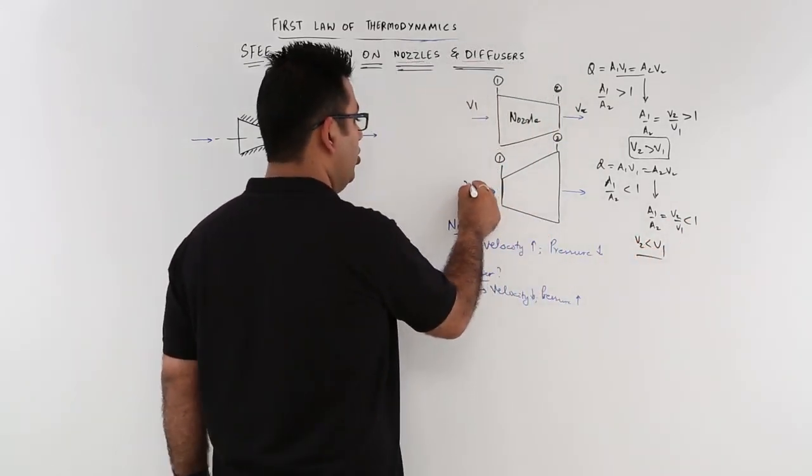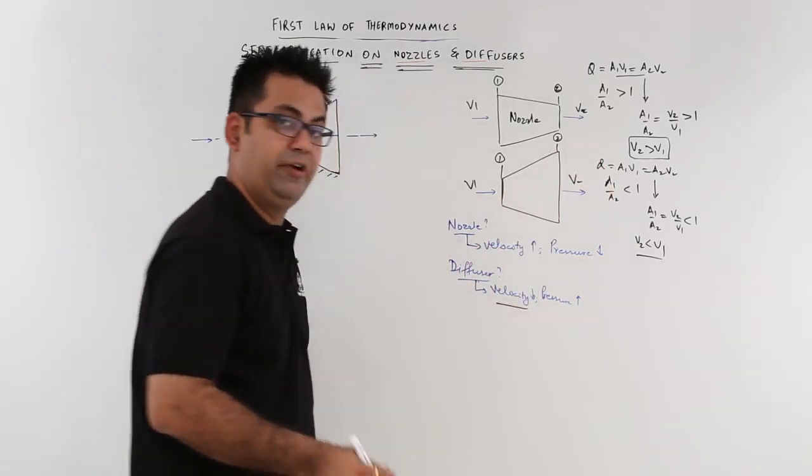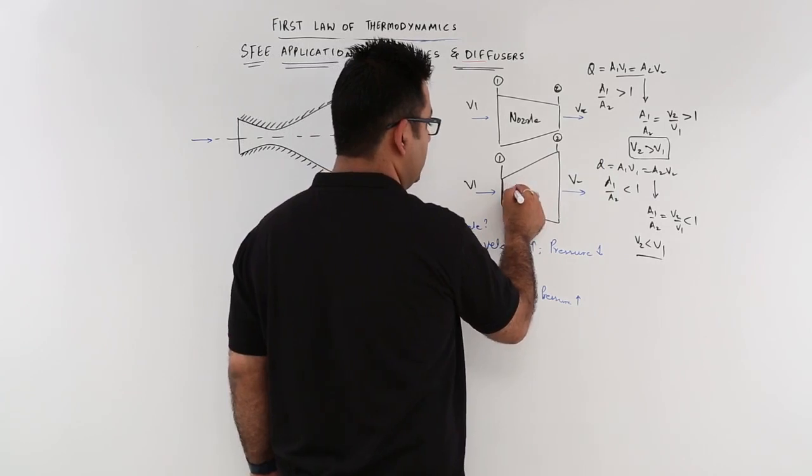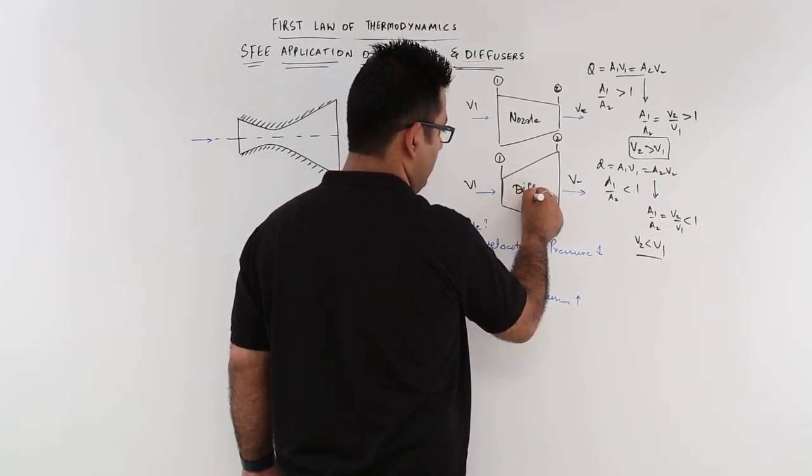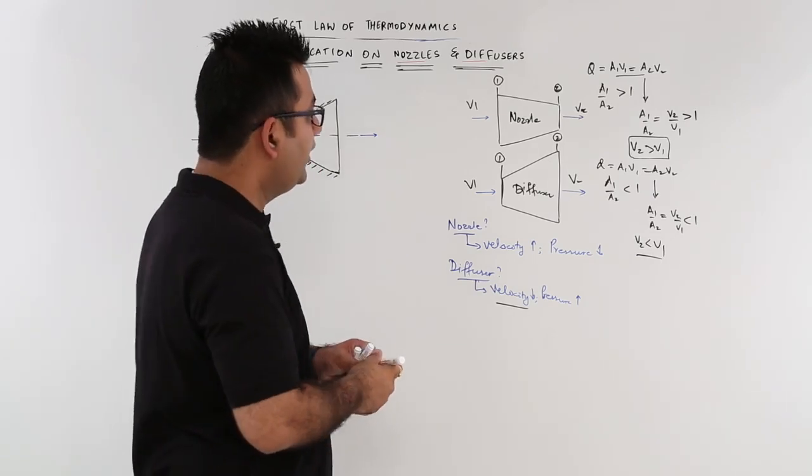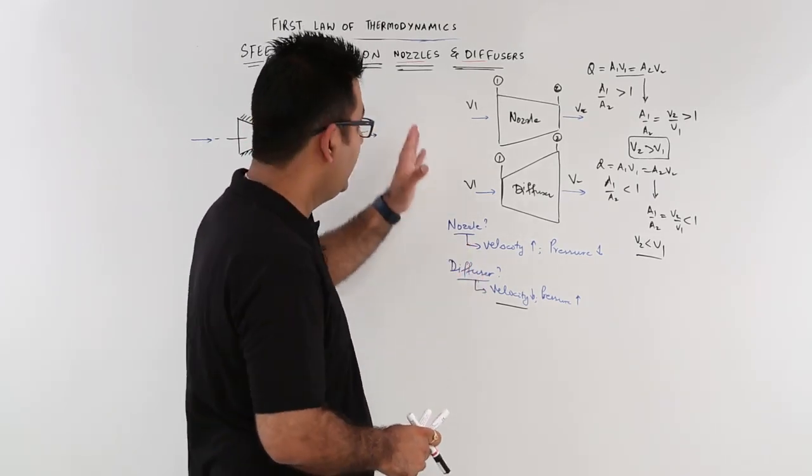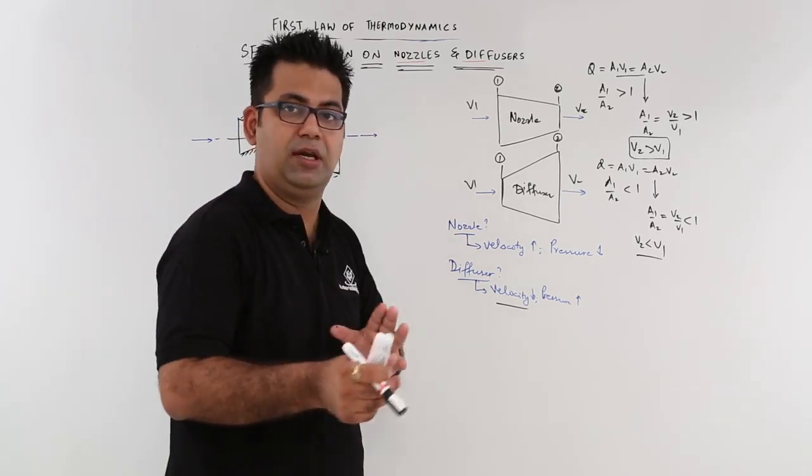So you have lower velocity at exit. And that is the case in the case of a diffuser. So this becomes a diffuser. I hope now you are able to understand and recognize any given diagram as a nozzle or a diffuser.